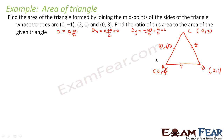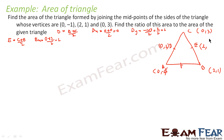Similarly, let us find point E. E is nothing but the midpoint of C and B. E of X will be 0 plus 2 by 2, that is 1. E of Y will be 3 plus 1 by 2, that is 4 by 2, that is 2. So E is (1, 2).